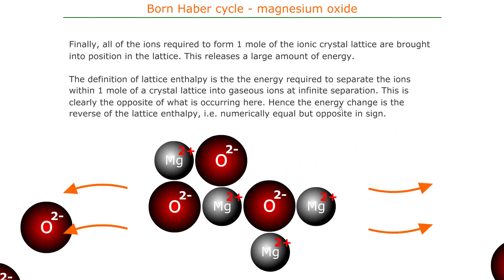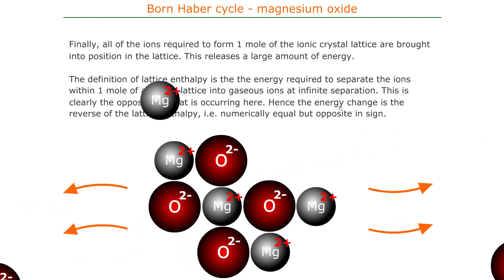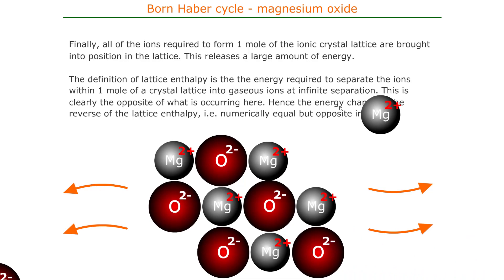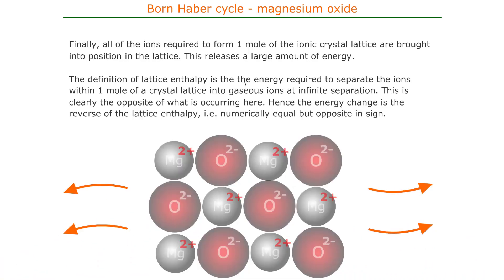Mathematically it's very simple. We've seen the construction of the Born-Haber cycle for magnesium oxide. To calculate the enthalpy of formation we simply add up all of the energetic steps to go the other way round the circle.